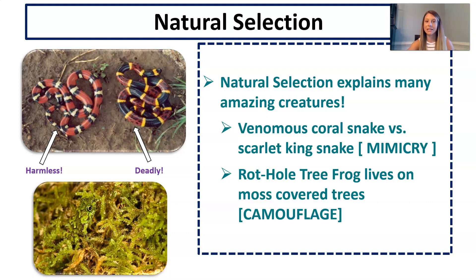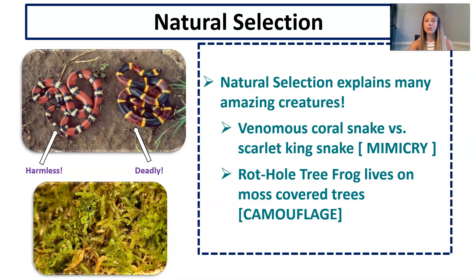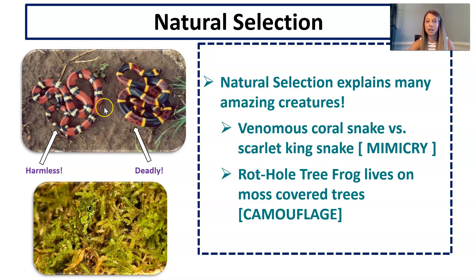Natural selection explains how this happened. Along the way, predators learned to avoid snakes that were red, black, and yellow. So if you were a snake and you were red, black, and yellow, you were more likely to survive, more likely to reproduce and pass on those traits to the next generation, until eventually we had an entire population of snakes almost identical to the deadly-looking coral snake with just a slight difference in the color pattern.